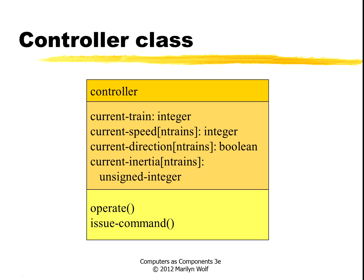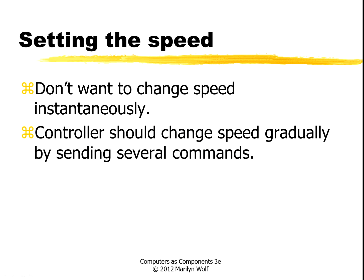Here's the controller class. Once again, remember that we have arrays for the speed, the direction, the inertia, so that we remember all the values for all the trains. We have a function for the operate, and we have a function for issue command.